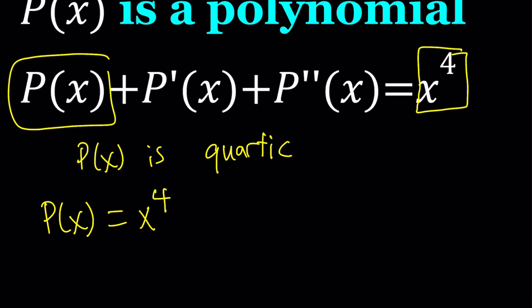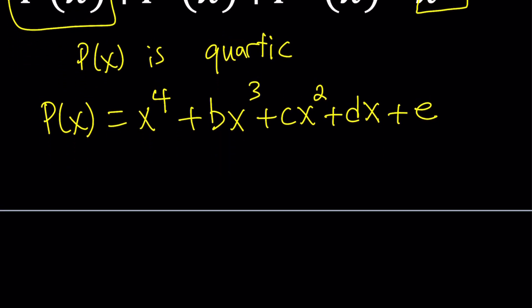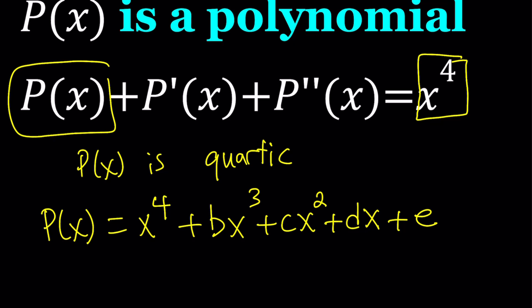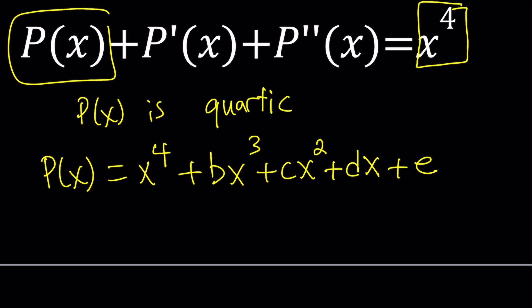Great. So let's go ahead and write P of X as X to the fourth plus B X cubed. I just skipped A because it's the coefficient of X to the fourth. In this case, A is equal to one and then plus C X squared plus DX plus E. So that's going to be my general quartic with the leading coefficient of one. In other words, the monic quartic. So now what am I going to do with this? I'll differentiate it and I'll differentiate it again and then add those up. And that should give me X to the fourth. Solve for the problem and then share with you the result from Wolfram Alpha. And that will briefly talk about why that's the case. Anyways, without further ado, let's differentiate this.